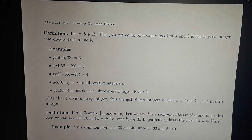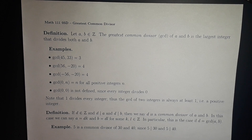In general, if d is an integer that divides both a and b, then we say that d is a common divisor of a and b. In this case, we can say that a equals d times k and b equals d times l, for some integers k and l.